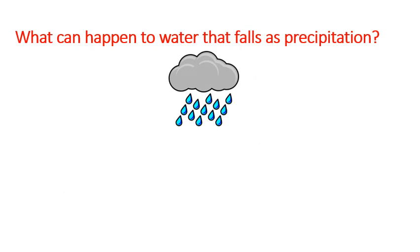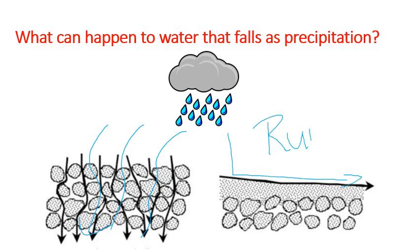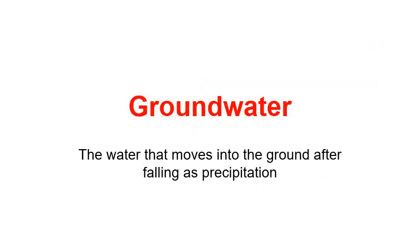What can happen to water that falls as precipitation? Only one of two things. Water that falls as precipitation either works its way into the ground, or when it hits the ground, it moves across the surface. This water that moves across the surface is called runoff. Groundwater is simply the water that moves into the ground after it falls as precipitation — it doesn't move across the surface, it goes into the ground.